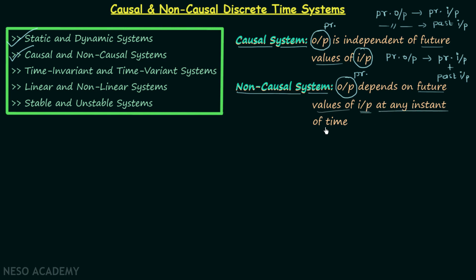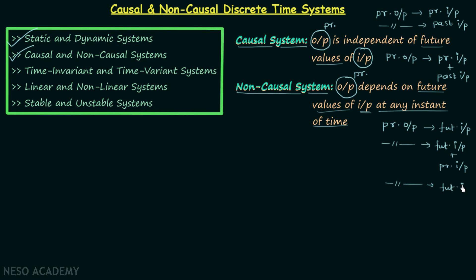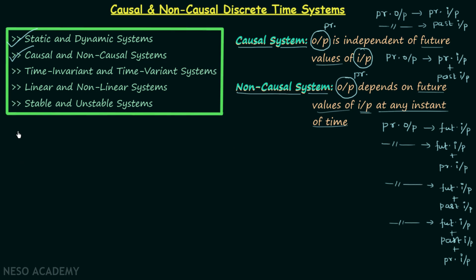A non-causal system is a system in which the present output is depending on future values of input at any instant of time. The possibilities include: output depending only on future values, on future and present values, on future and past values, or on future, past, and present values of input. In all these cases the system is non-causal.